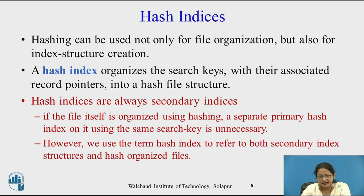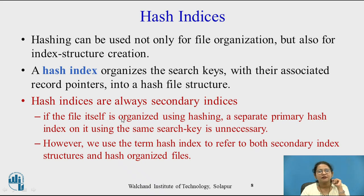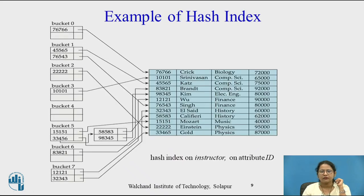The next point is hash indices. Hashing can be used not only for file organization but also for index structure creation. Hash indices organize the search keys with their associated record pointers into a hash file structure. Hash indices are always secondary indices. If the file itself is organized using hashing, a separate primary hash index on it using the same search key is unnecessary. However, we use the term hash index to refer to both secondary index structures and hash-organized files. With the help of hashing, a hash index file is created with buckets 0 to 7 pointing to the records.